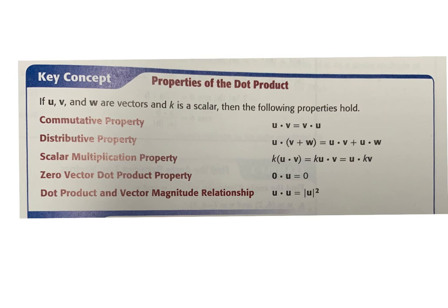Properties of the dot product: Commutative — order does not matter, since it's multiplication and addition. Distributive — you can do a dot product between the sum of two vectors, and it's the same as doing the dot product individually and adding them. For the scalar property, you can multiply a scalar through. When there's an addition sign, the dot product applies to both terms. When it's scalar, it's all multiplication — you don't multiply the scalar twice, or you'd have k squared. Zero times something is zero, and a vector dotted with itself is the magnitude squared.